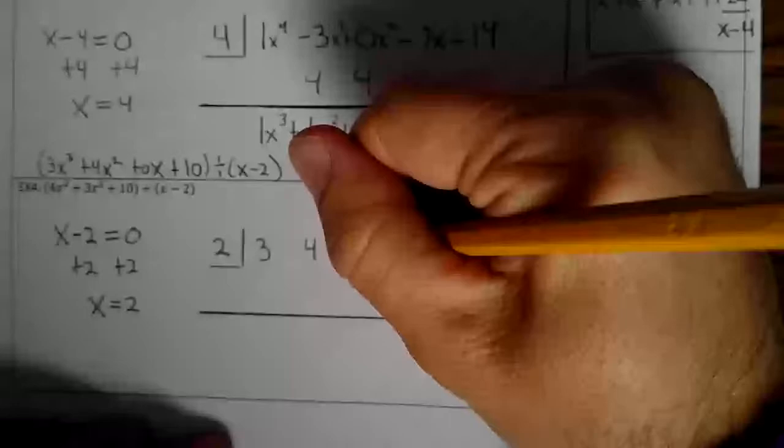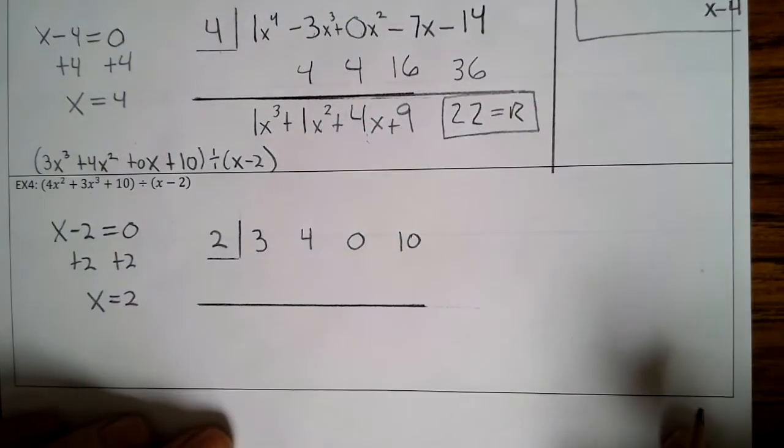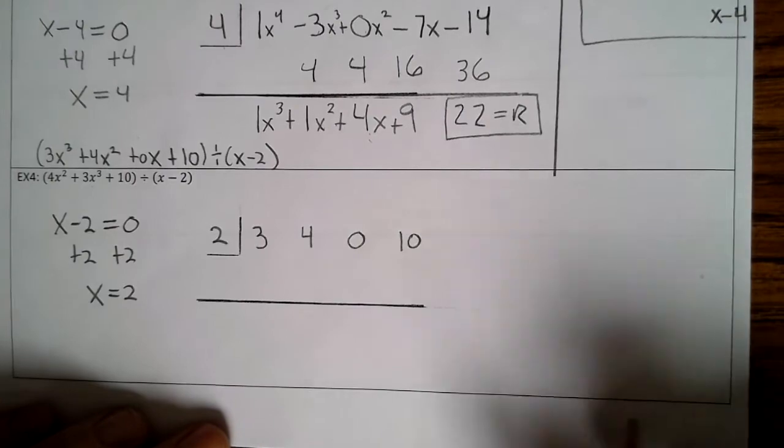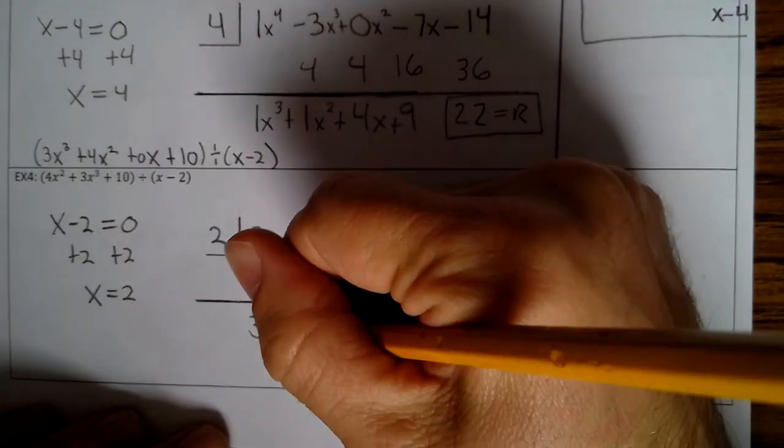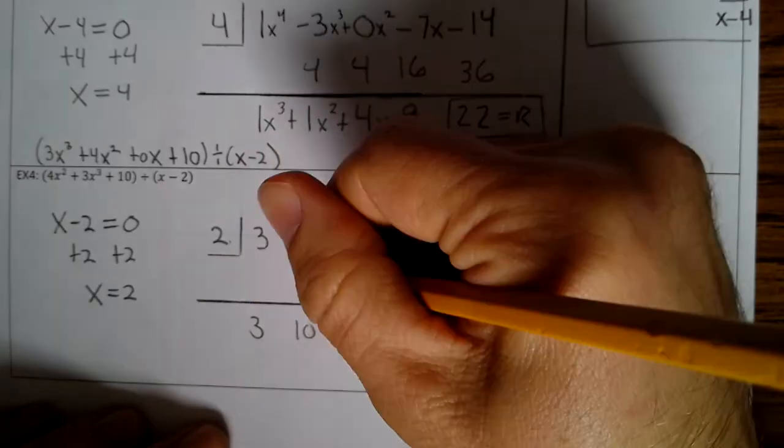All right. So bring down the 3. 2 times 3 is 6. 4 plus 6 is 10. 2 times 10 is 20. 0 plus 20 is 20. 2 times 20 is 40. 10 plus 40 is 50.